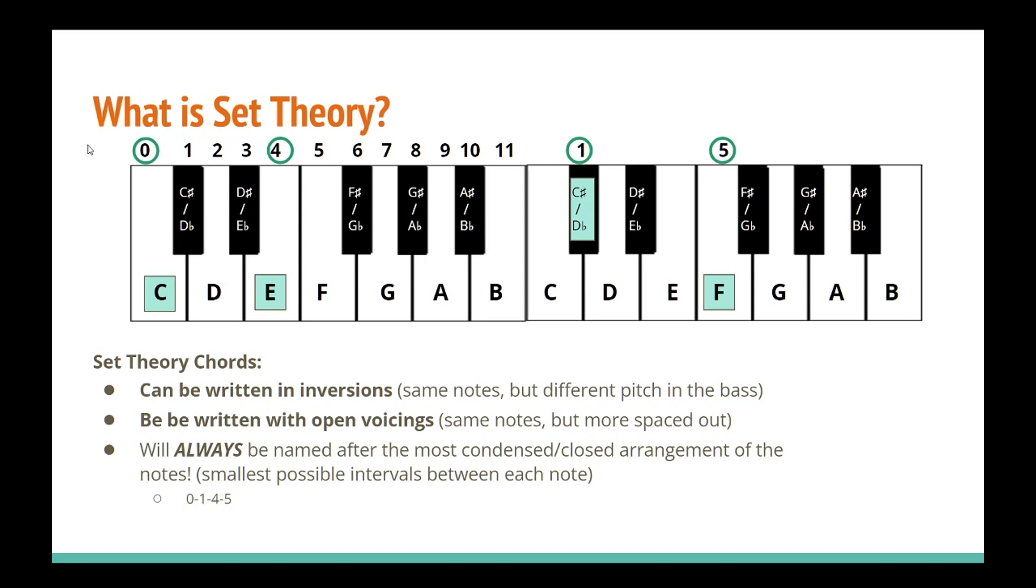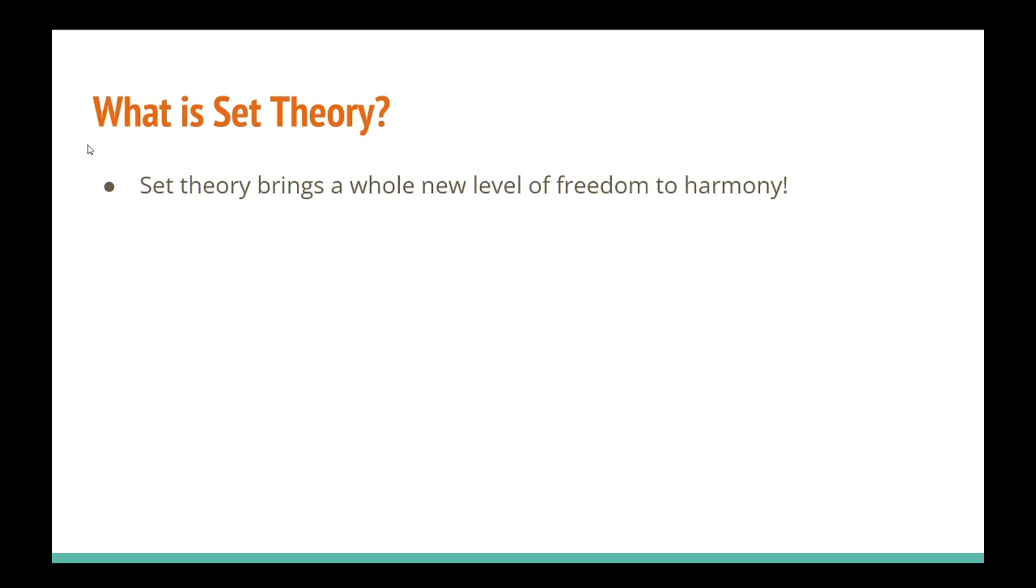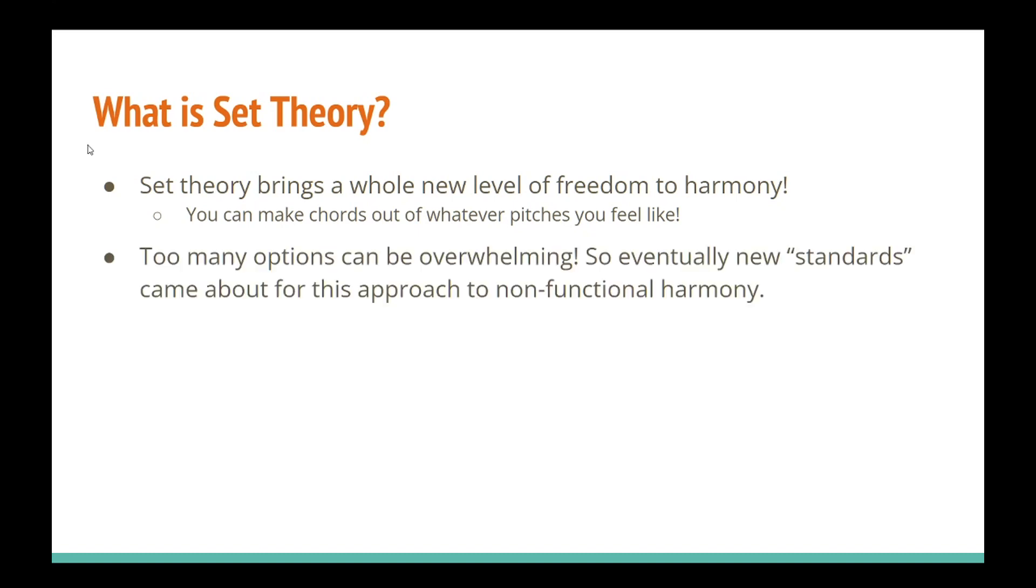And that's the basics of it. The point of set theory was to introduce a whole new level of freedom to the composer's ability to choose whatever kind of harmonies they felt like using, regardless of key, function, or even diatonic structure. However, like with most things, when left with nearly limitless options to choose from, making decisions can become a little more difficult. So, naturally, over time, composers began to gravitate towards different approaches within set theory. And we're going to cover just a couple of them.